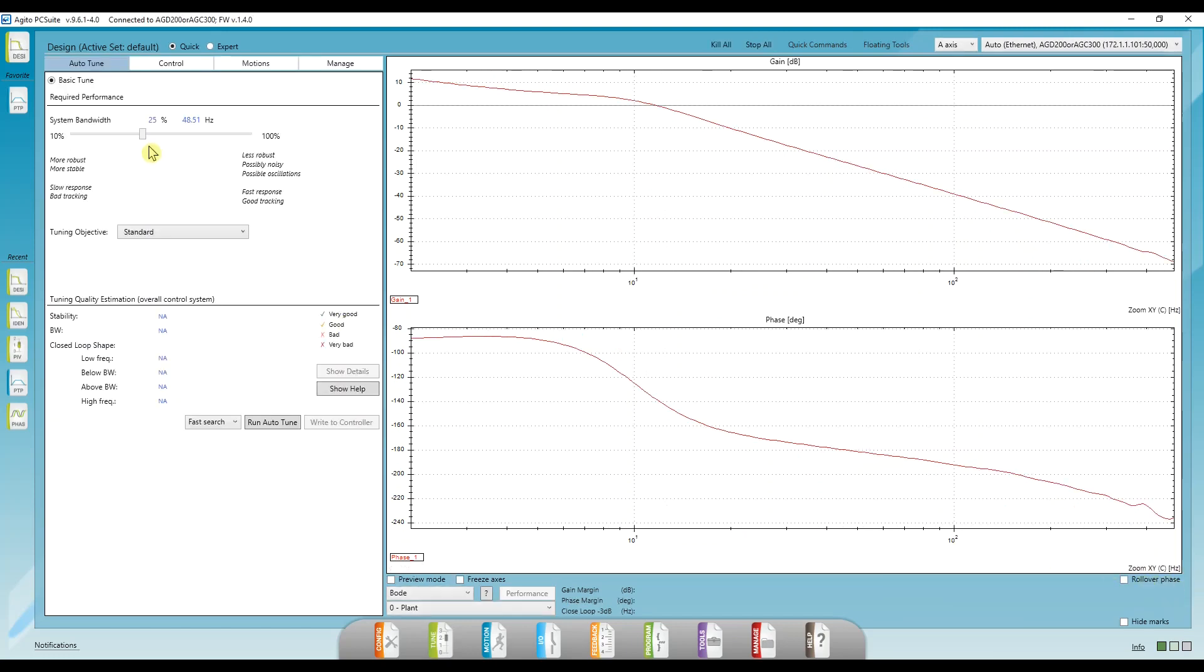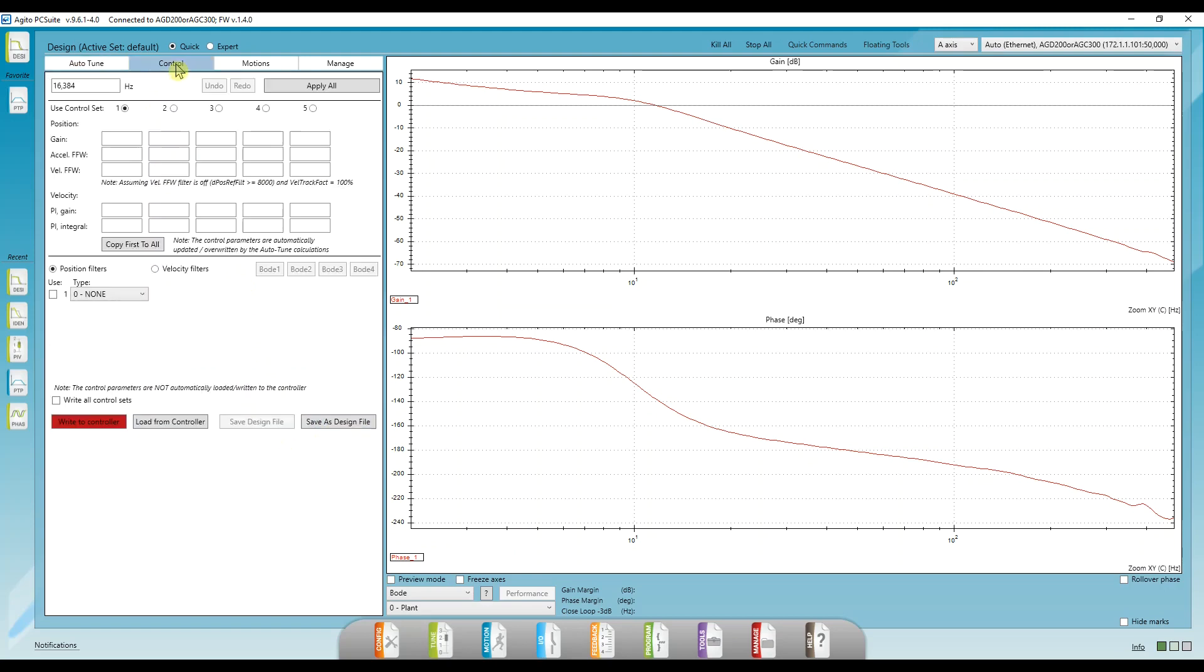First of all, we can simply specify the bandwidth we want and click on Run Auto-Tune, to get a good initial estimate for the control parameters. But we'll be tuning our parameters manually in this video to gain a deeper understanding of the parameter's effects on the system behavior. But before we continue and tune our controller, what would be considered a good controller?